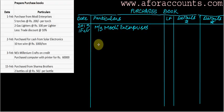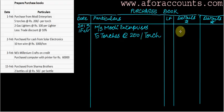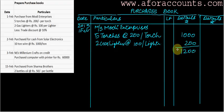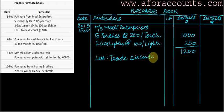MS Modi Enterprises: five torches at the rate of 200 per torch comes to 1000 in the inner column. Two gas lighters at the rate of 100 per lighter comes to 200. Total is 1200. Now, trade discount is never recorded in the books — never take it to the final column. Less trade discount at 10% is 120, so the final amount of purchases recorded in the books is 1080.